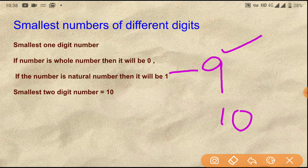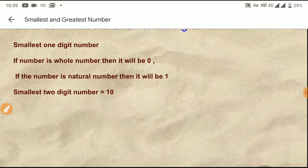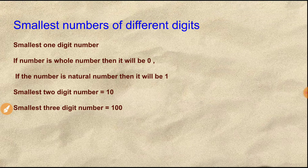We know that after 9 in counting, 10 comes. So 9 is the last 1-digit number and 10 is the smallest 2-digit number. From 10 to 99 — 99 is the greatest 2-digit number. After 99 the 3-digit numbers begin, and 100 is the smallest 3-digit number.